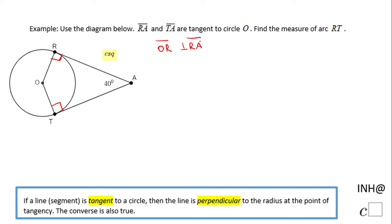These two statements tell me that the measure of angle R is 90 degrees and the measure of angle T is also 90 degrees.